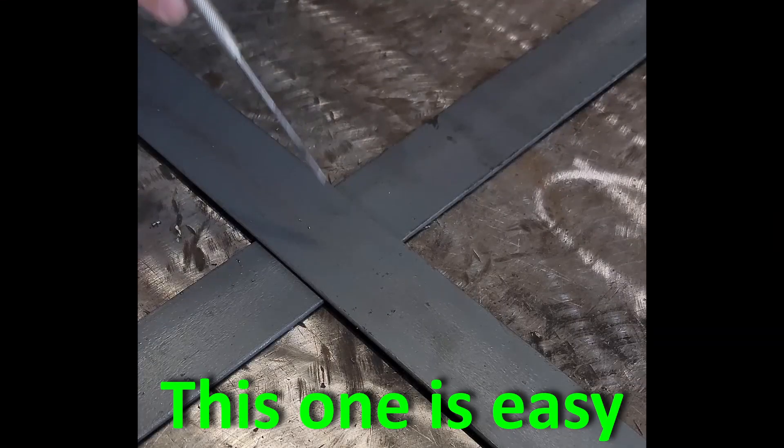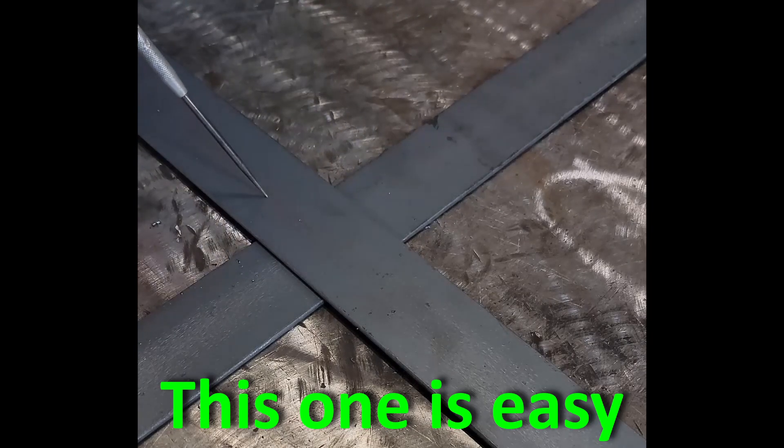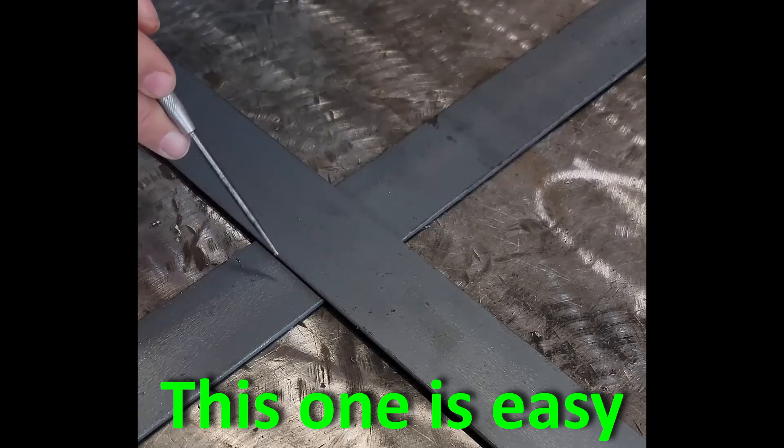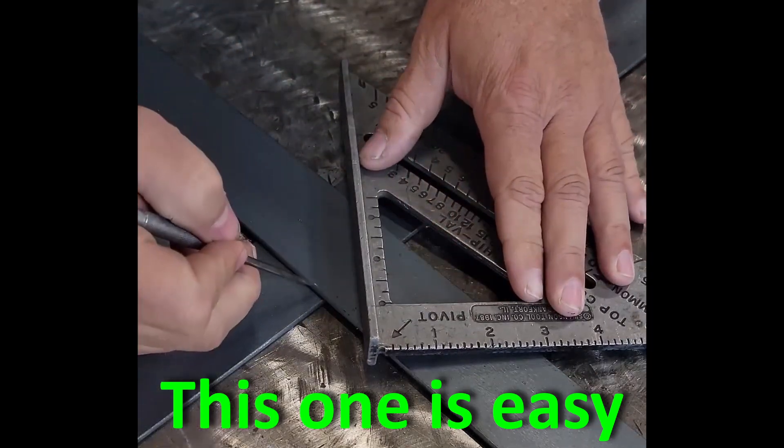The first situation I want to show you is this right here. We want to find a center point on these two pieces of material that overlap each other. It doesn't have to be square like this one is. They can be out of sync from each other, but this one is square.